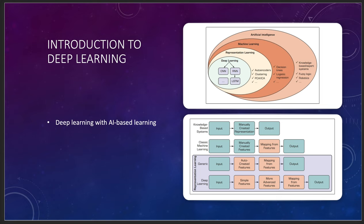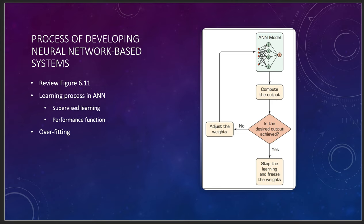The adjective 'deep' in deep learning refers to the use of multiple layers in the network. The more layers you've got, the better it will work. You can have representation, machine learning, artificial intelligence, knowledge-based systems, classic machine learning, and then deep learning. These layers will really help tidy up the model and make things a little bit easier.